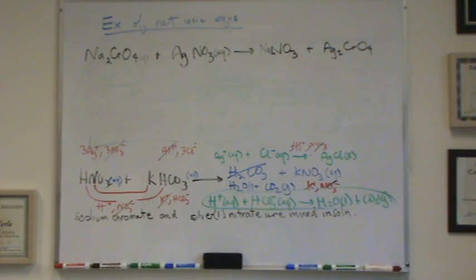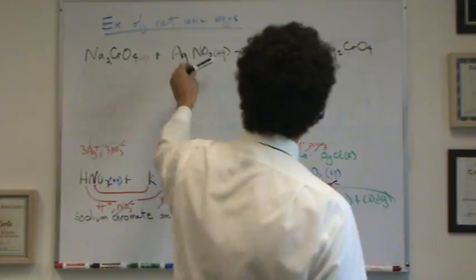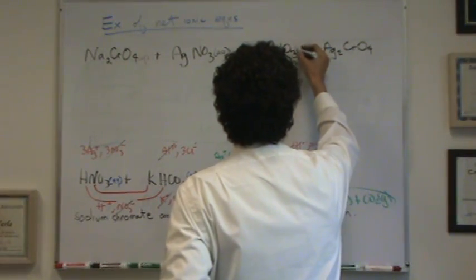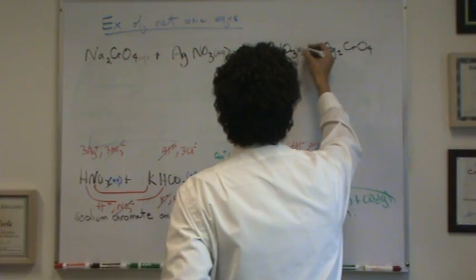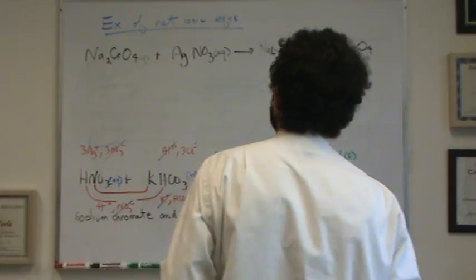And then I want to find this step two. I want to find out what's aqueous. Well, I already knew that the reactants were aqueous because it said in the question they're mixed. But if you didn't realize that, anything with sodium is always aqueous. Anything with nitrate is always aqueous. How do I know that? I read the solubility rules.